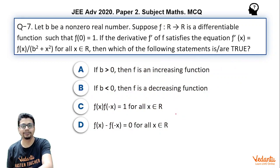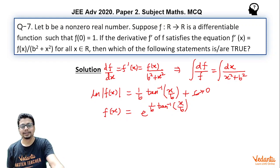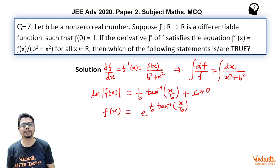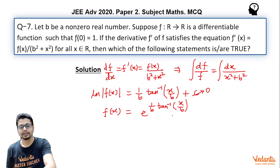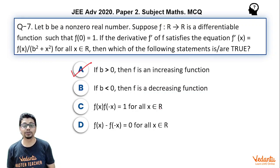Now let's explore option A: if b > 0, then f is an increasing function. Indeed, as x increases, arctan(x/b) also increases, so (1/b) · arctan(x/b) increases, and therefore e^((1/b) · arctan(x/b)) increases. So option A is correct.